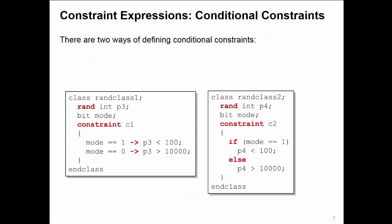You can define conditional constraints where the constraints are dependent upon the value of a property of the class. There's two ways of doing this. The first form uses an implication operator, which is the dash greater than symbol.